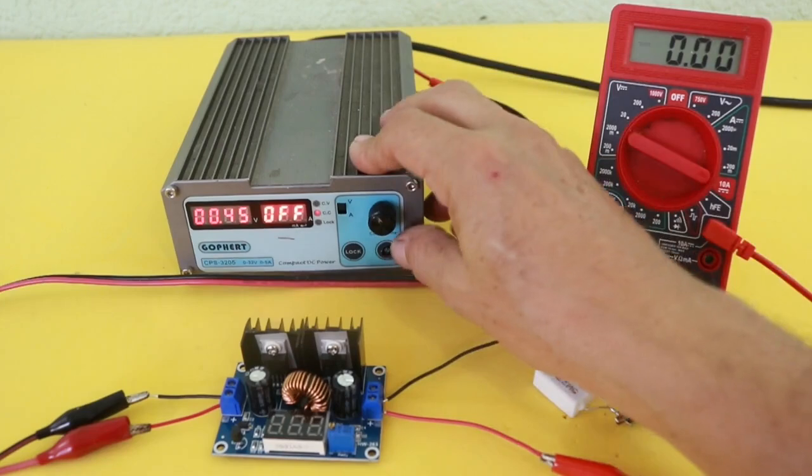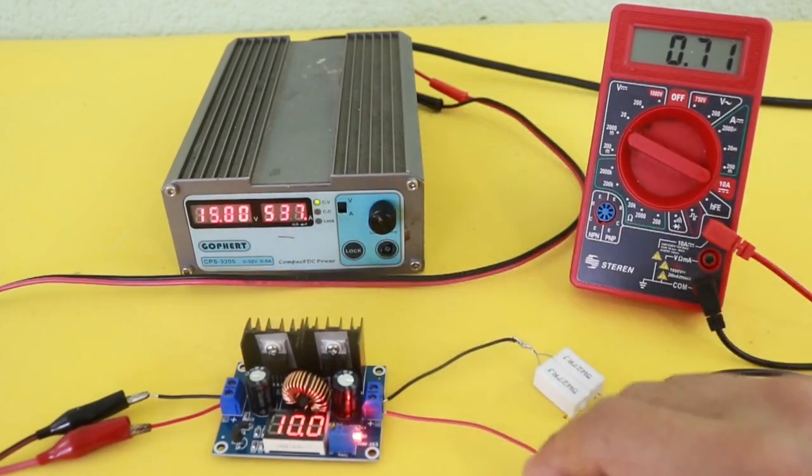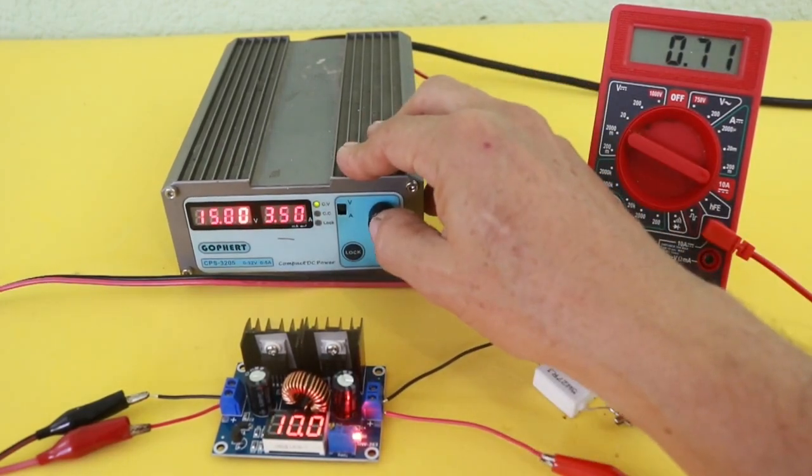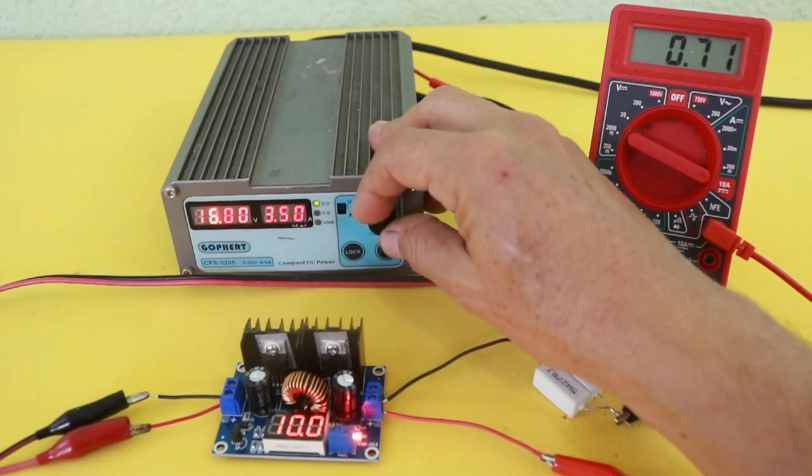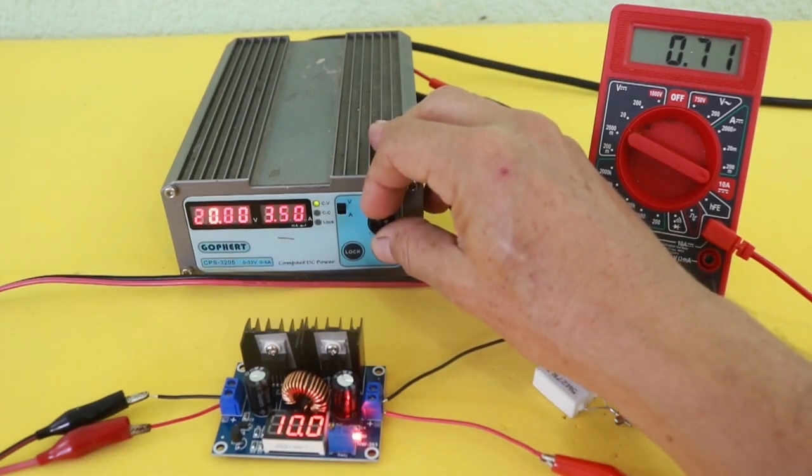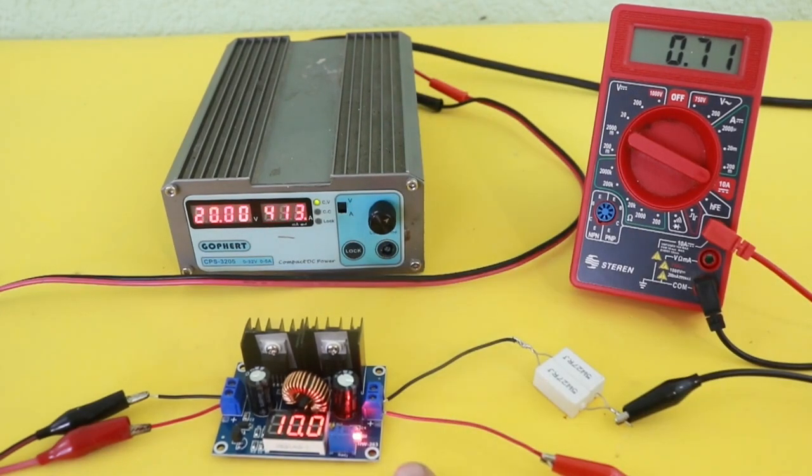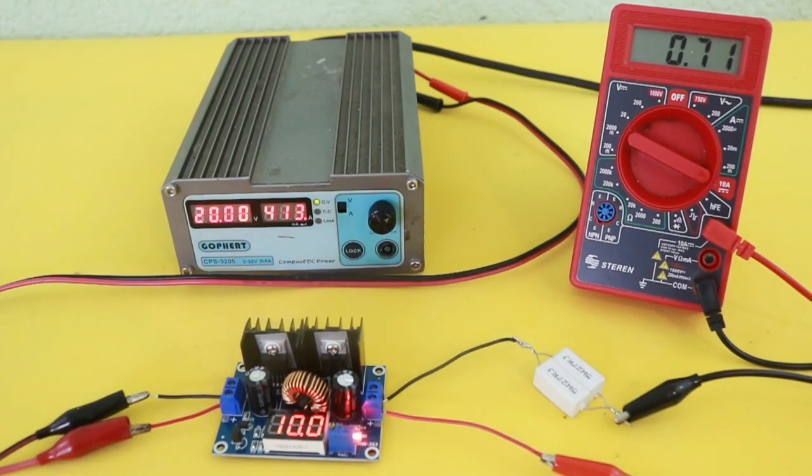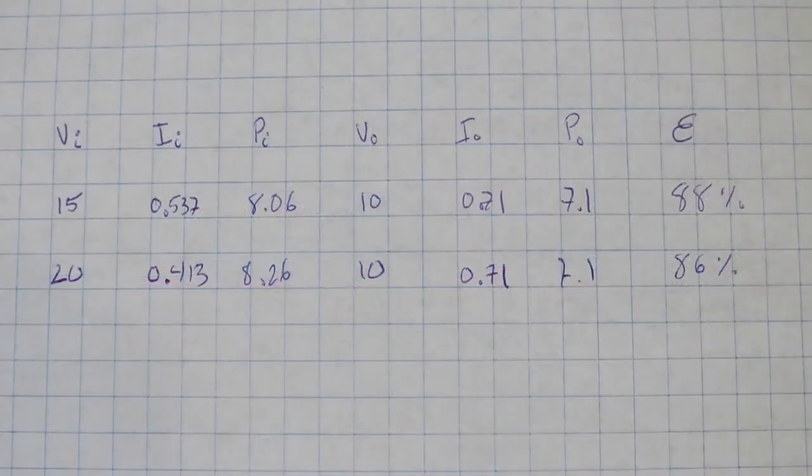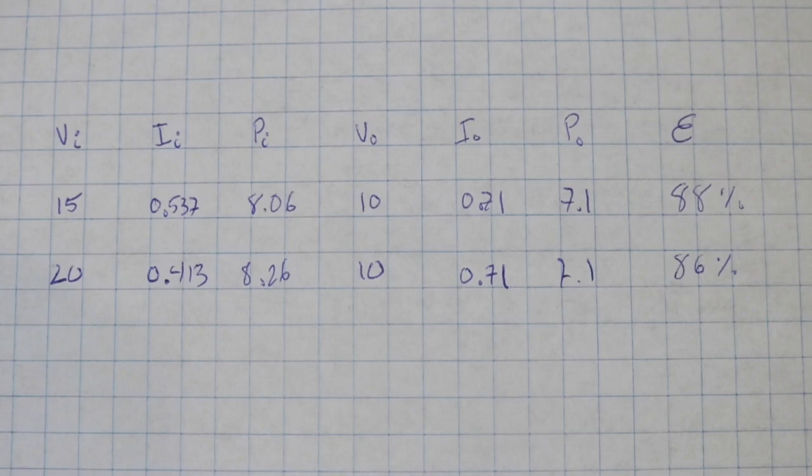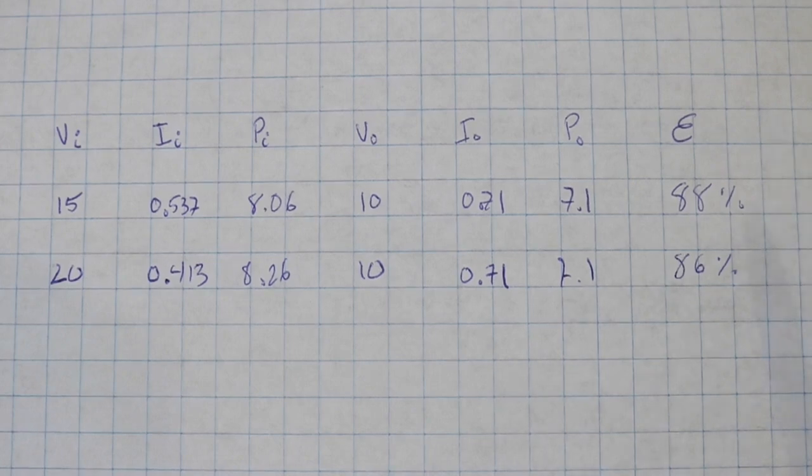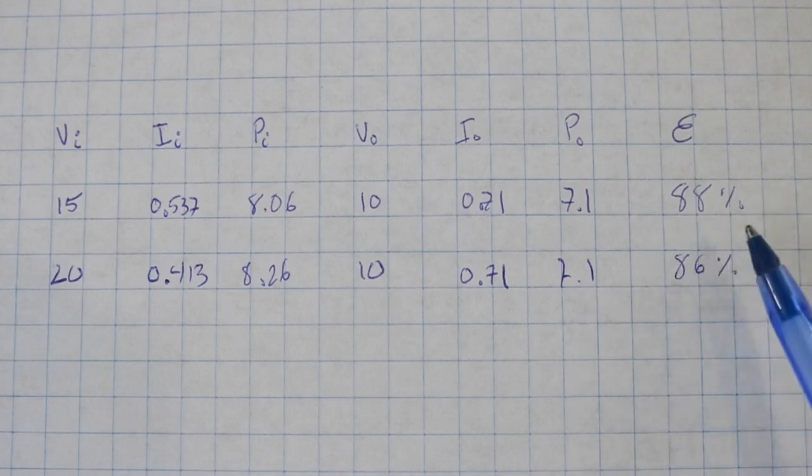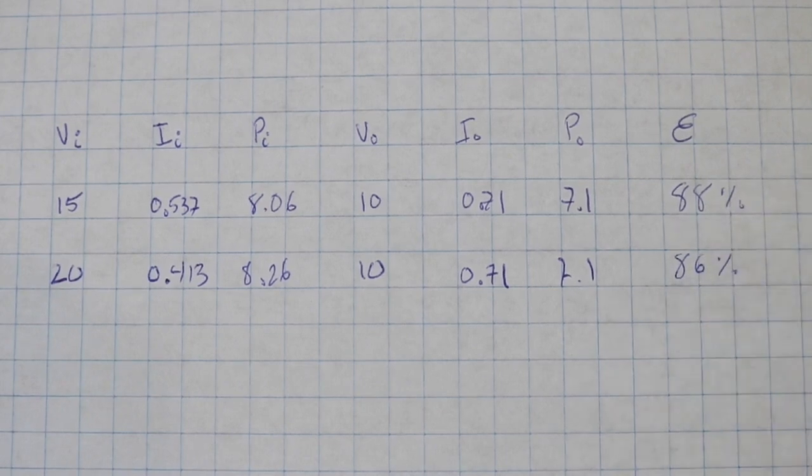Okay, let's repeat the calculation but now using a larger voltage differential. I am setting 20 volts at the input and 10 at the output, and again I will take note of the voltage and current values. Okay, now with a larger reduction in voltage we can see that the efficiency is slightly lower, from 88 to 86 percent.